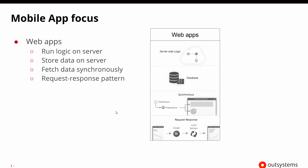Previous versions of OutSystems allowed us to build web applications, and those web applications had different types of screens that could make synchronous calls to the server-side logic. Those could access different types of data, and we could occasionally update the screen with AJAX to be a little bit more dynamic.